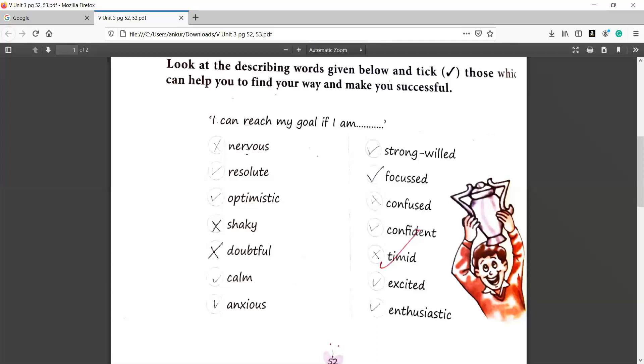I can reach my goal if I am. Now, if you have a goal for yourself, first one is given nervous. Nervous means that you are thinking about everything. If you want to do something, you will definitely not be able to do it.